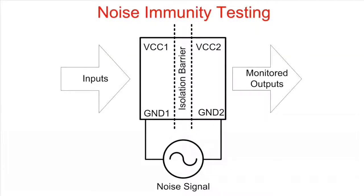GNTI is a test that TI performs to further evaluate the data integrity of our isolation devices across a large range of frequencies. If you are familiar with the Common Mode Transient Immunity test, or CMTI for short, which is performed on all isolators, GNTI is similar. Both of these tests create a varying voltage potential across the isolation barrier of the device while monitoring the outputs of the data channels to test the overall immunity of the device.